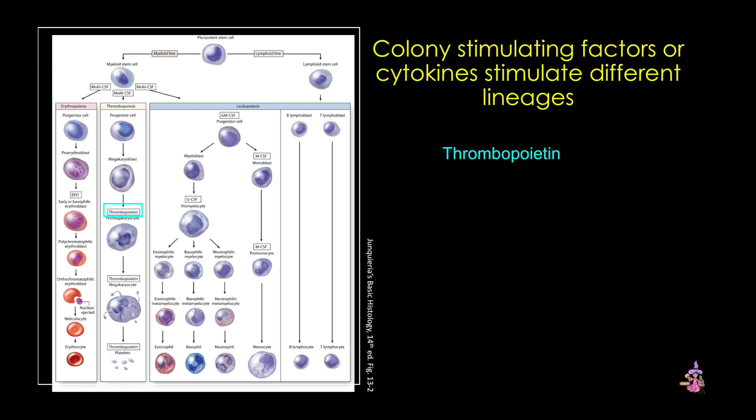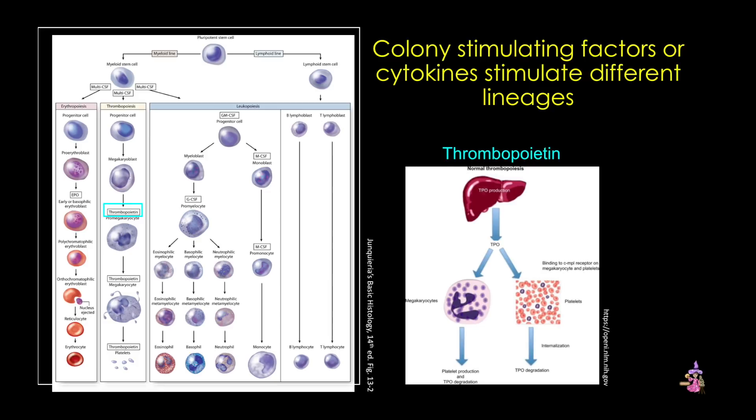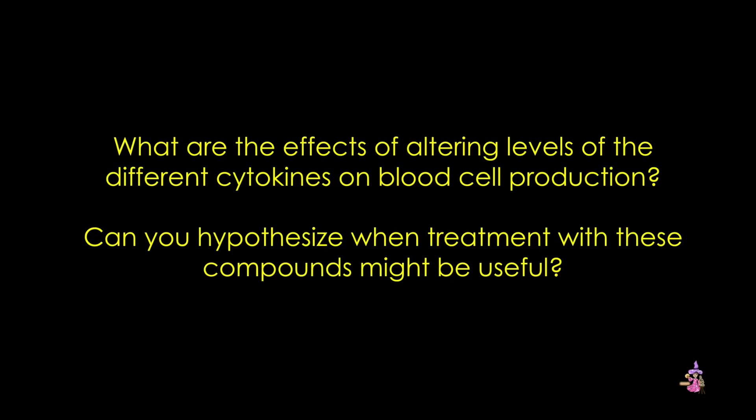A second important cytokine is thrombopoietin, a major mitogen for the platelet cell lineage. It stimulates megakaryocyte production and maturation in the marrow, which ultimately increases the number of platelets in the peripheral blood. Thrombopoietin is also produced in the liver and, to a lesser extent, in the kidney. When studying hematopoiesis, it's helpful to think about the potential effects of changes in these cytokines on blood cell production — what kinds of situations might call for treatment with specific cytokines, and when might a more general cytokine that stimulates all lineages be more useful?